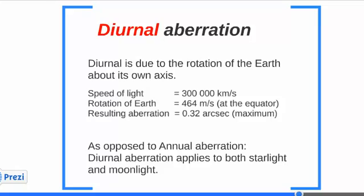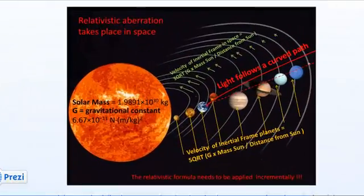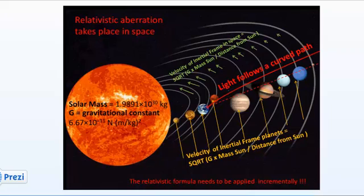Let's get back to the original question: where does aberration take place? Does it take place near the observer on Earth, or does it take place in space? My take is that it takes place in space.